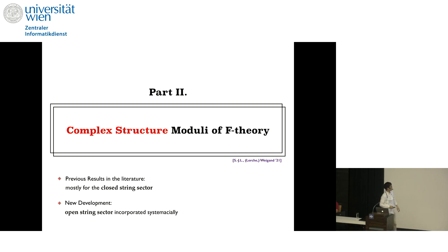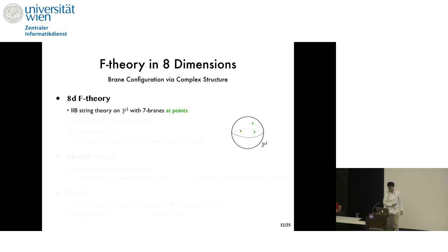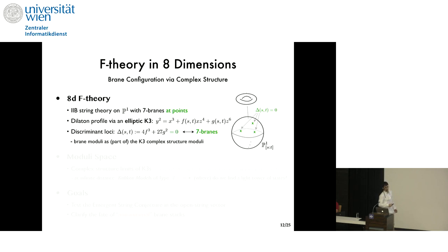Now, let's switch to the complex structure moduli of F-theory, of which novelty is that now open-string sector can be incorporated into the story systematically. We're still with F-theory, but now in 8D, for simplicity, so our internal space is P1, which is just a two-sphere. Once again, the dilaton profile is encoded in the elliptically-fibered, now K3, over this P1. And now we will care for the fibrations. The fibration is described in terms of the model of this form where S and T are the homogeneous coordinates for the base P1, and F and G are degree 8 and 12 polynomials in them. And delta, the discriminant is defined as F cubed plus G squared, of which vanishing loci support singular fibers, indicating that seven branes lie there.